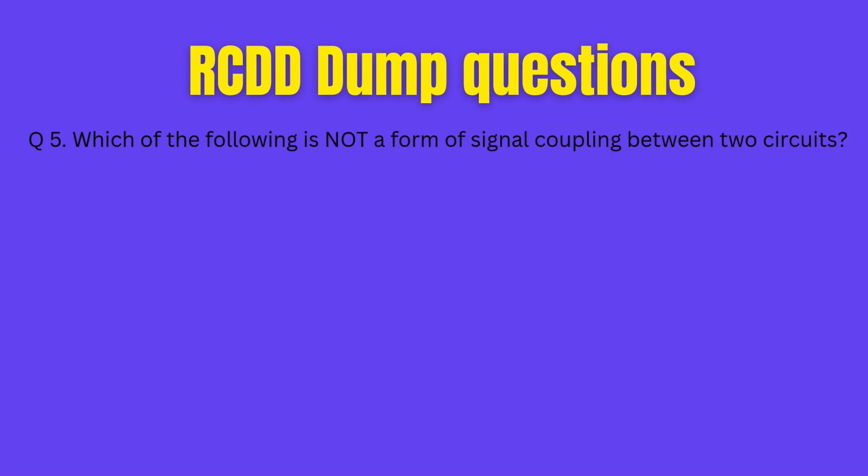Question 5. Which of the following is not a form of signal coupling between two circuits? A. Conductive. B. Inductive. C. Reactive. D. Capacitive. Okay, pause and pick your best guess — 20 seconds, start now.